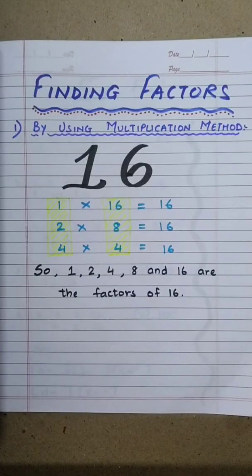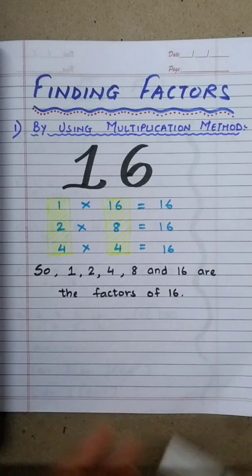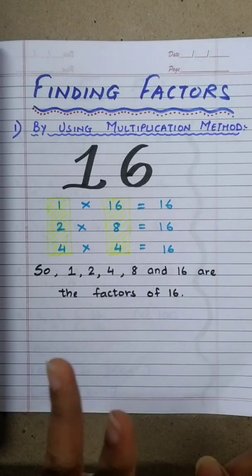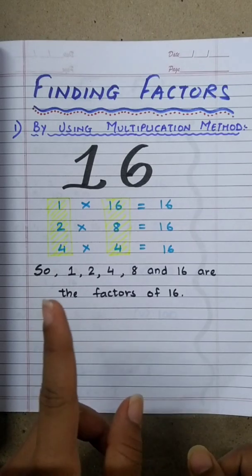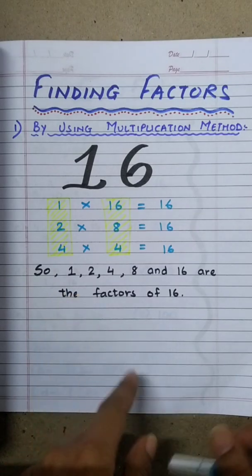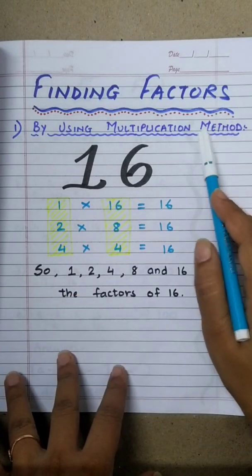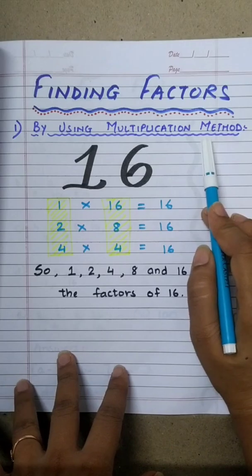Now, I will tell you how to find out the factors of the given number. There are two methods of finding out the factors. The first method is the multiplication method.